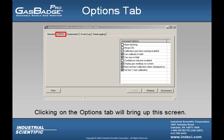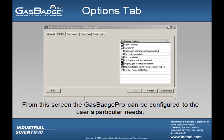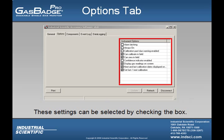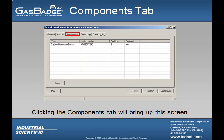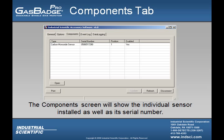If the user clicks on the Options tab, this screen will appear. The Options screen allows the user to configure the instrument to their needs. These settings can be configured by checking the box next to the corresponding feature — a checkmark means that feature is enabled, and no checkmark means it is disabled. If the user clicks on the Components tab, this tab will show the individual sensor installed as well as the sensor's serial number.